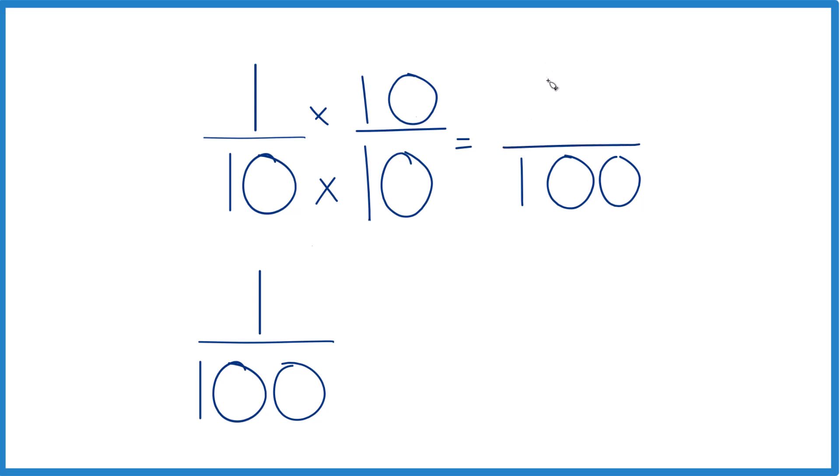So now we have 1 times 10. That's 10 up here. And then over here we have 1 over 100. And you can see same denominator here. Compare the numerators.